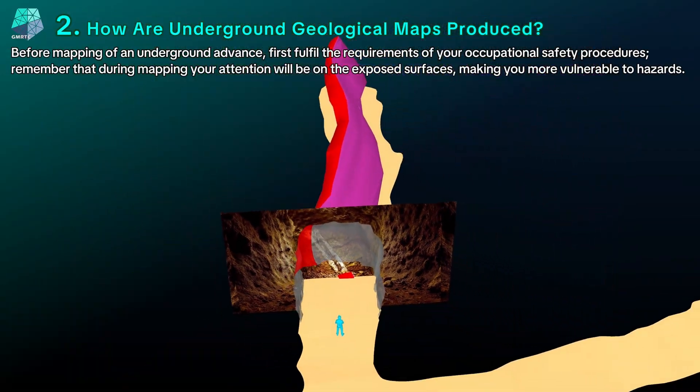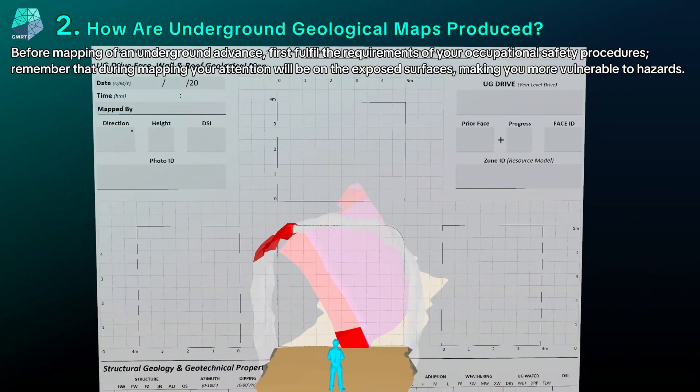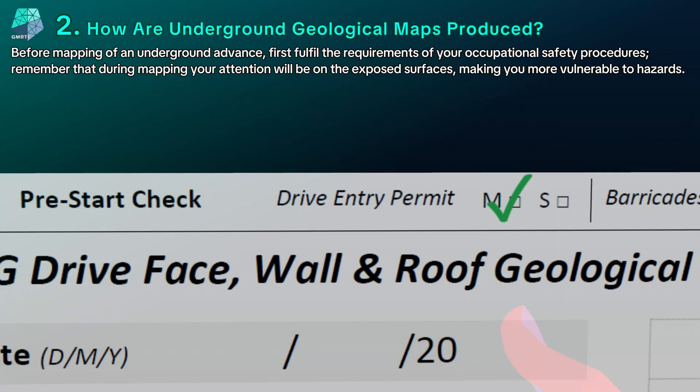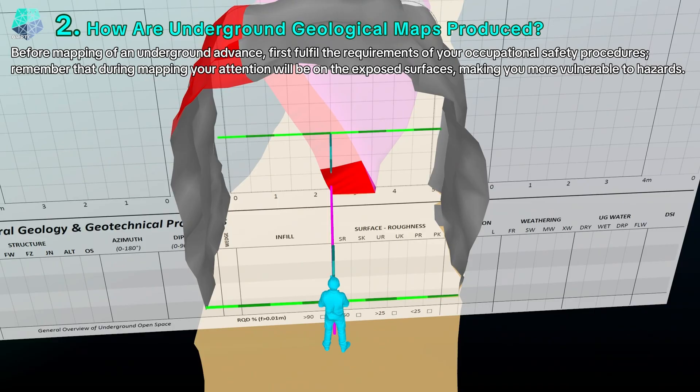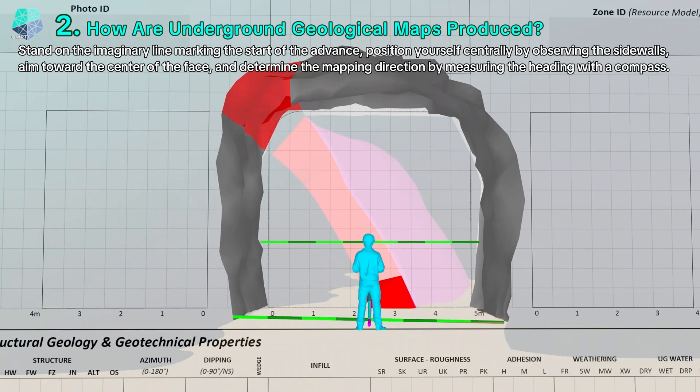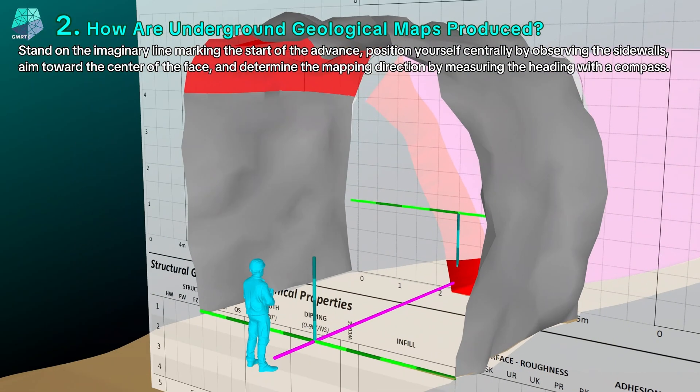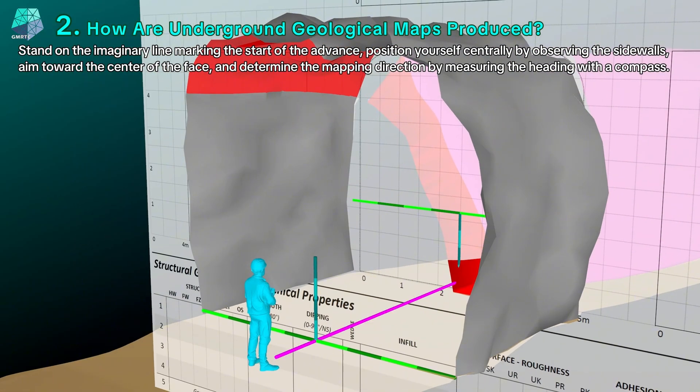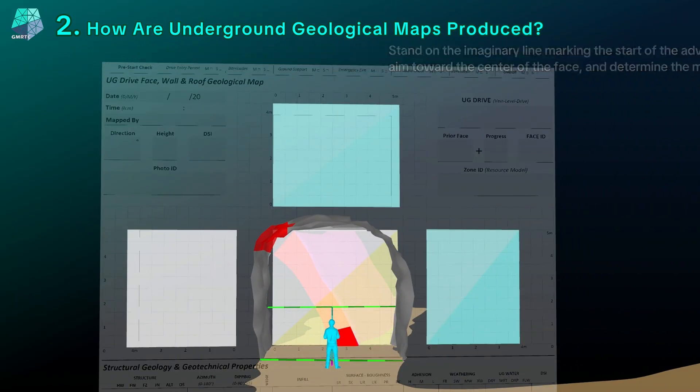Before mapping of an underground advance, first fulfill the requirements of your occupational safety procedures. Remember that during mapping, your attention will be on the exposed surfaces, making you more vulnerable to hazards. Stand on the imaginary line marking the start of the advance. Position yourself centrally by observing the sidewalls. Aim toward the center of the face and determine the mapping direction by measuring the heading with a compass.